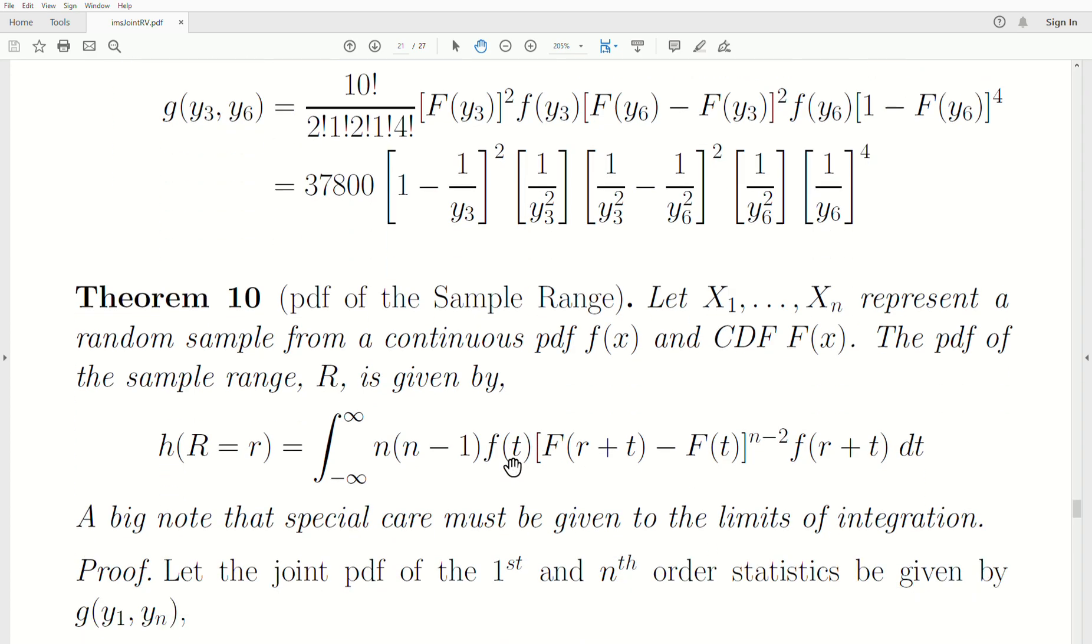Now let's move into finding the PDF of the sample range. The sample range is the largest value in our sample minus the smallest value in our sample. When you talk about the PDF of the sample range, since we're talking about order statistics, specifically the joint PDF of the largest and smallest order statistics, it fits into this order statistics playlist.